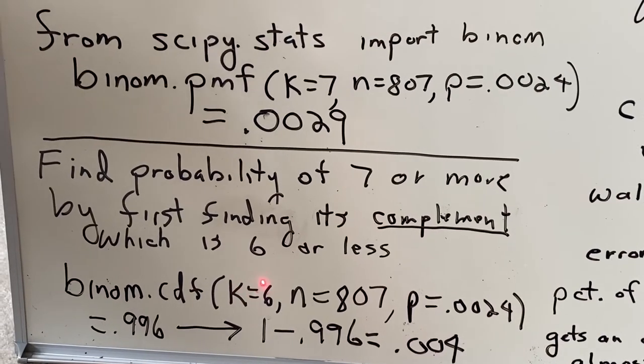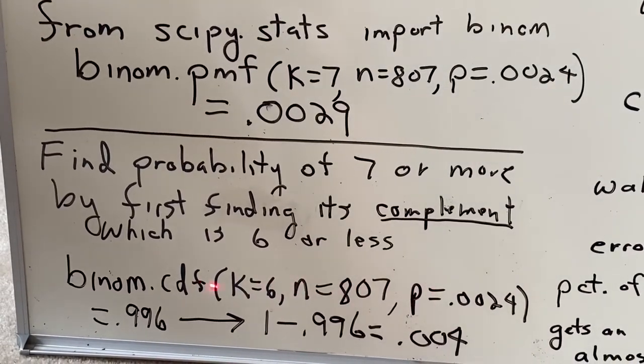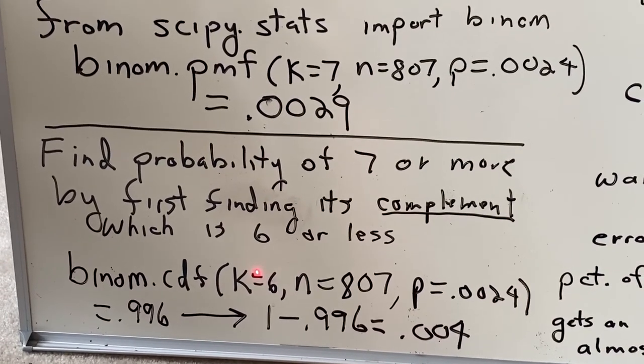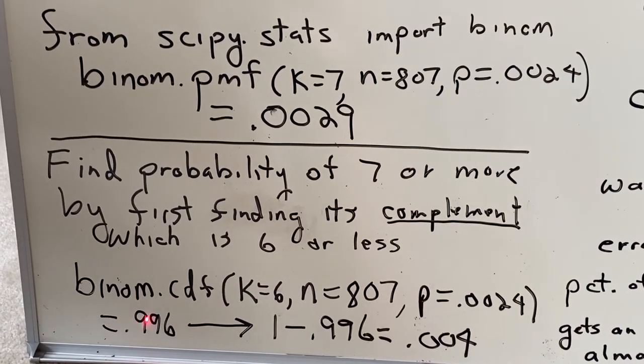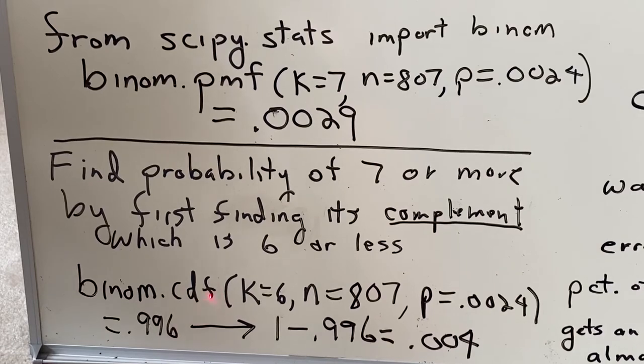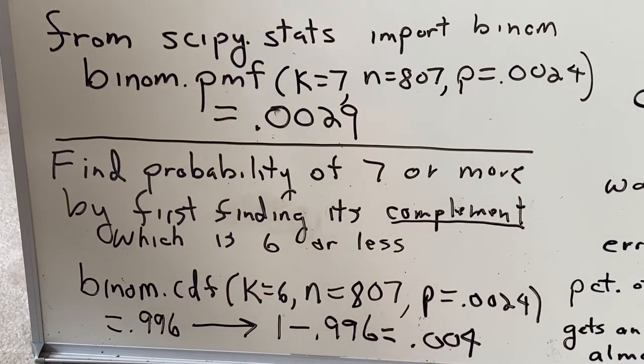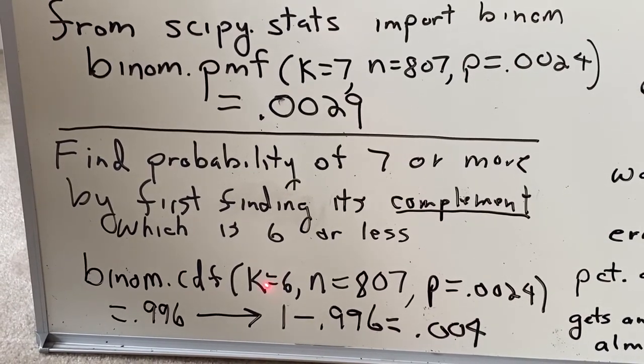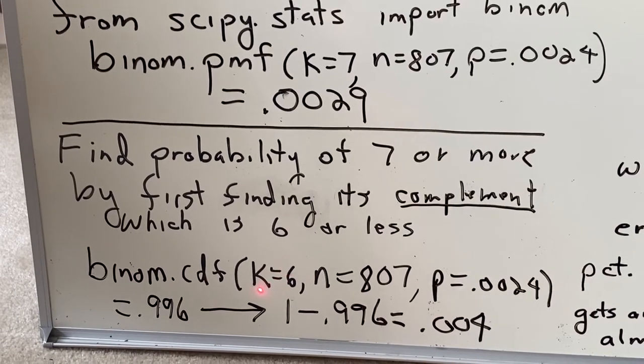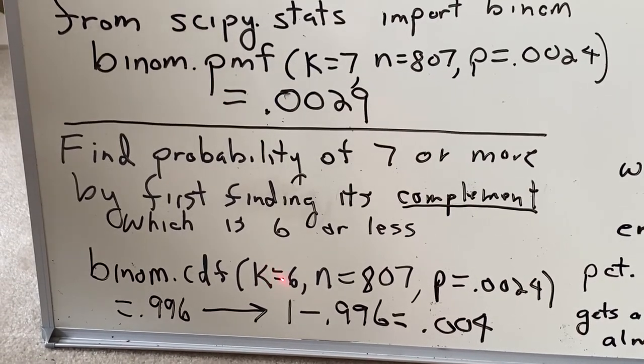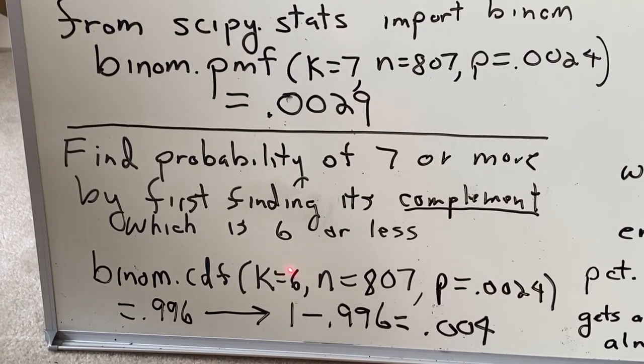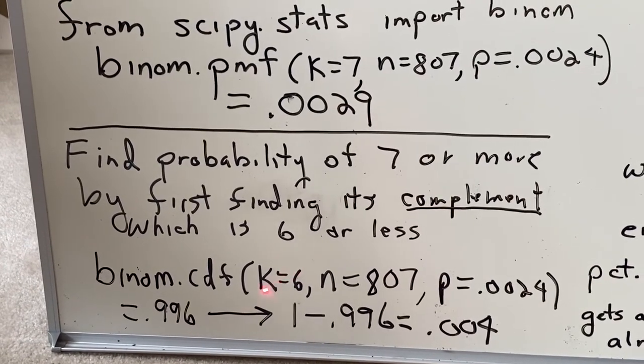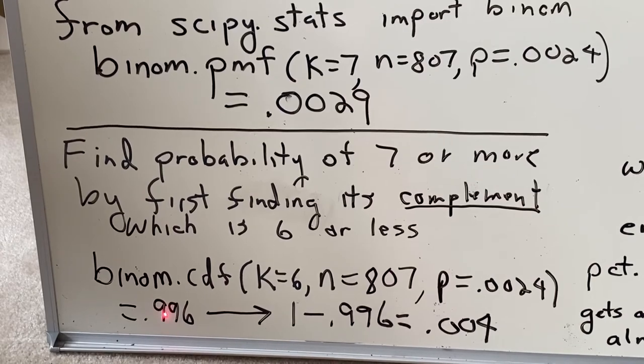So this formula finds the probability of 6 or fewer no-hitters. What is that probability? It's 0.996. But we didn't want the probability of 6 or fewer. We wanted the probability of 7 or more. Well, 7 or more is the complement of 6 or fewer. So again, the probability of 6 or fewer is 0.996.